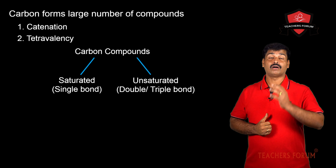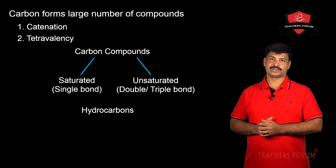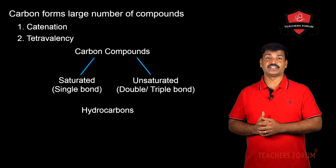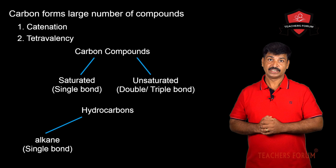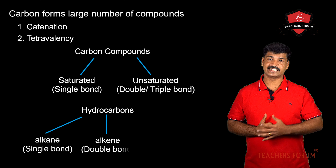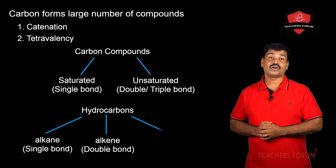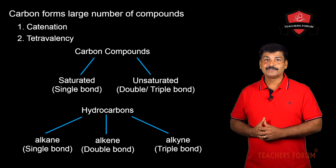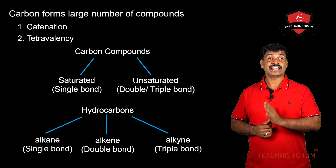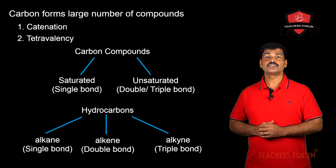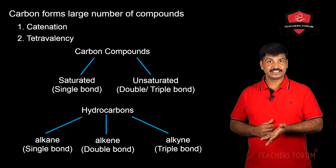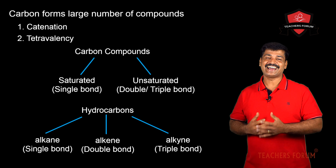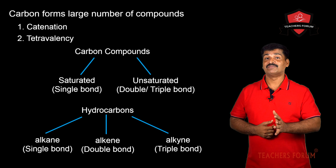If a carbon compound contains only carbon and hydrogen, those compounds are called hydrocarbons. In a hydrocarbon, if a single bond is present, those compounds are called alkanes. If a double bond is present, they are called alkenes, and if a triple bond is present, the compound is called an alkyne. So alkanes have single bonds (a-n-e), alkenes have double bonds (e-n-e), and alkynes have triple bonds (y-n-e).